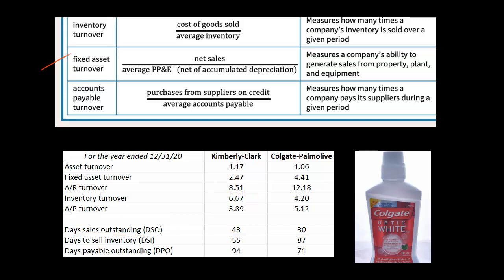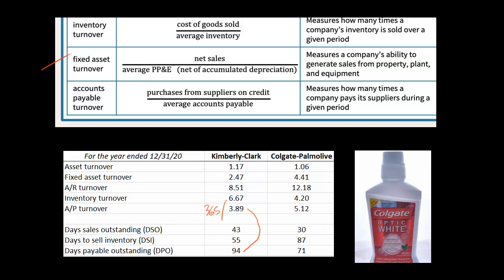Days sales outstanding is the average number of days it takes to collect receivables. So if Kimberly-Clark sells something to Walmart, it takes on average 43 days for them to collect payment — 43 days for that sale to turn into cash. I recommend converting all turnover ratios this way: 365 divided by inventory turnover of 6.67 gives 55 days to sell inventory, and 365 divided by payable turnover gives the number of days to pay suppliers.